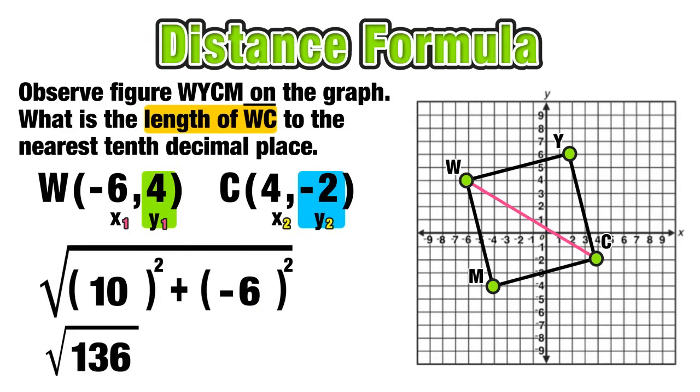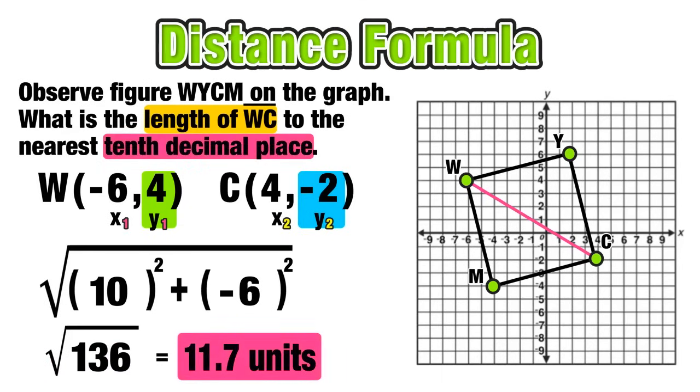And now we just need the square root of 136, which is going to equal an irrational number. And since the question asks us to round to the nearest tenth decimal place, we'll round our answer to 11.7, the length of line segment WC.